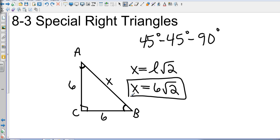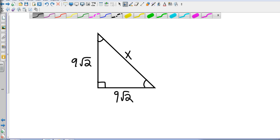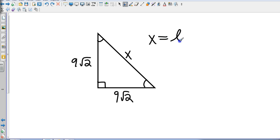Let's take a look at another example. If they throw some radicals in there, not a big deal. We know that the hypotenuse is the square root of 2 times the leg. So again, x equals the leg times the square root of 2. In this case, it's going to be x equals 9 square roots of 2 times the square root of 2.